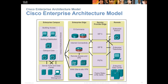The enterprise architect model has different key areas separated: enterprise campus-type networks, the enterprise edge, the service provider's edge, and our remote capacity. In our class we're dealing with the enterprise campus and the enterprise edge. The service provider deals with the service provider's edge. Remote users may have to connect through the service provider to get back to our network.